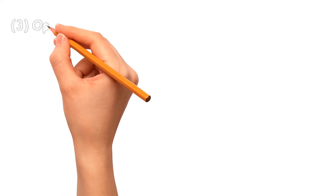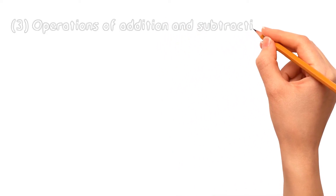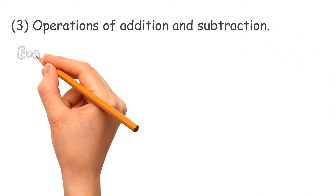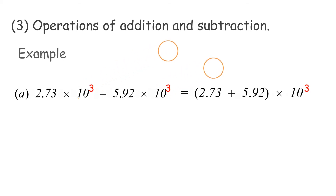Third: operations of addition and subtraction of numbers in standard form. Example A: 2.73 × 10³ + 5.92 × 10³. Both numbers have 10³ in common, so factor it out: (2.73 + 5.92) × 10³. Therefore, the answer is 8.65 × 10³.